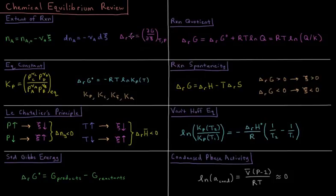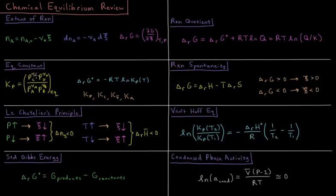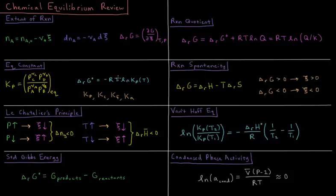Going through this derivation, we end up with what's called the equilibrium constant, where in terms of partial pressures, we get the partial pressure of each product to the power of its stoichiometric coefficient in the numerator, and the same values for the reactants in the denominator. The values at equilibrium are called the equilibrium constant, and the values not at equilibrium are called the reaction quotient. The standard Gibbs energy of reaction is equal to the negative gas constant times temperature times the natural log of the equilibrium constant. The equilibrium constant is not a function of pressure; it is only a function of temperature.